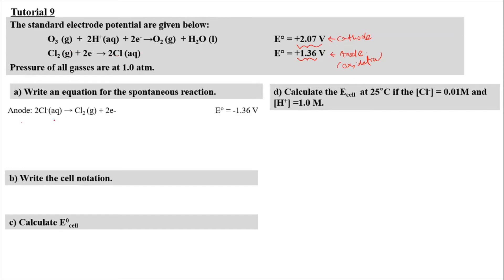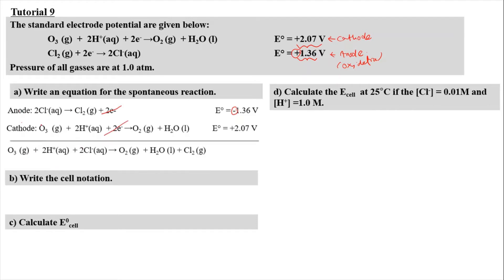We flip the equation for oxidation, where 2 chloride aqueous ions form chlorine gas plus 2 moles of electrons, and the sign changes to negative 1.36 volts. The oxidation of chloride aqueous ions happens at the anode. At cathode, we follow the reduction process for ozone forming into oxygen gas, giving a value of positive 2.07 volts. To provide a balanced chemical equation, the 2 moles of electrons cancel out, leaving: O₃(g) + 2H⁺(aq) + 2Cl⁻(aq) → O₂(g) + H₂O + Cl₂(g).